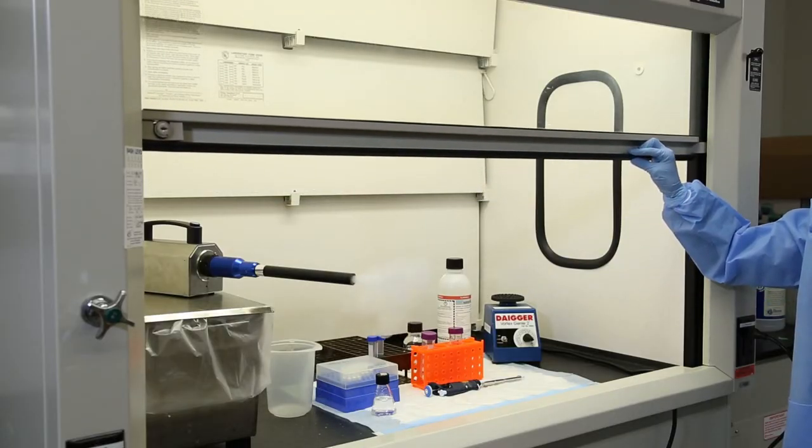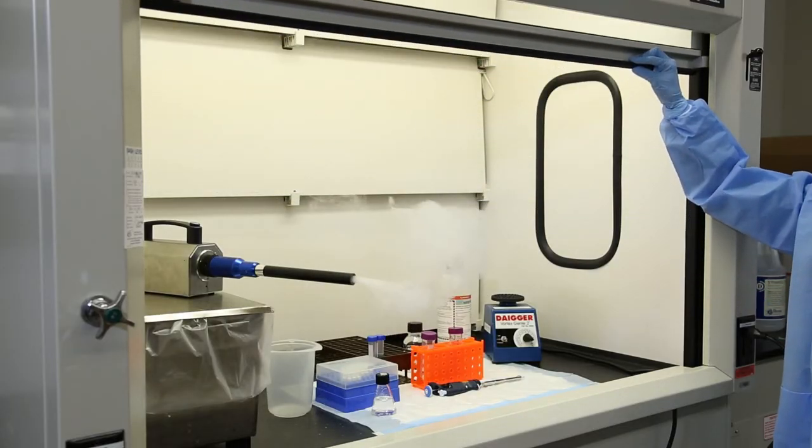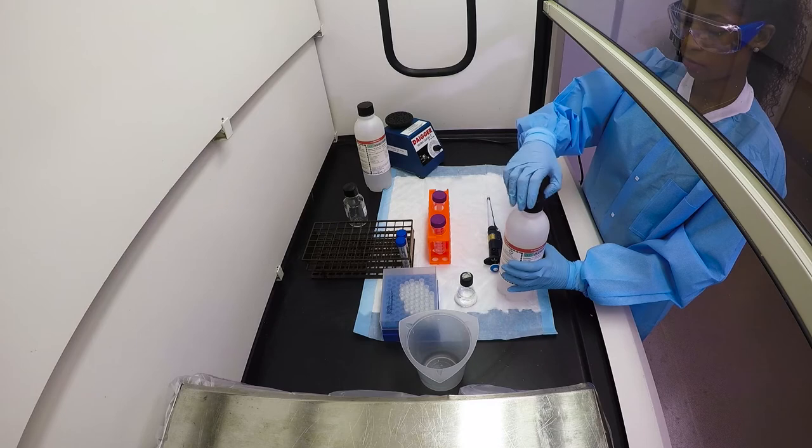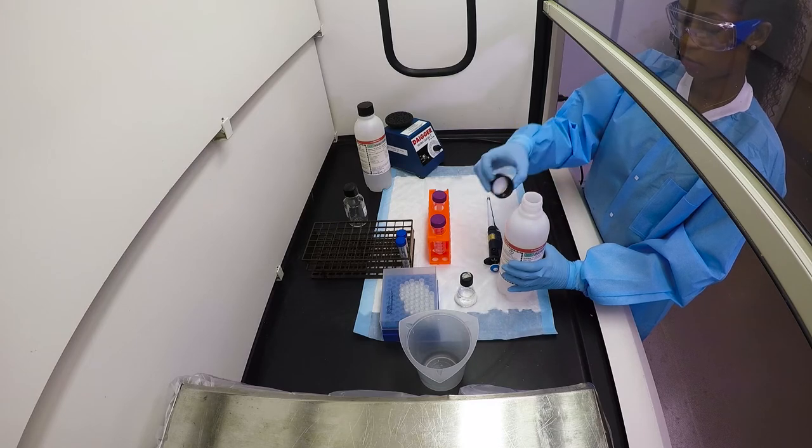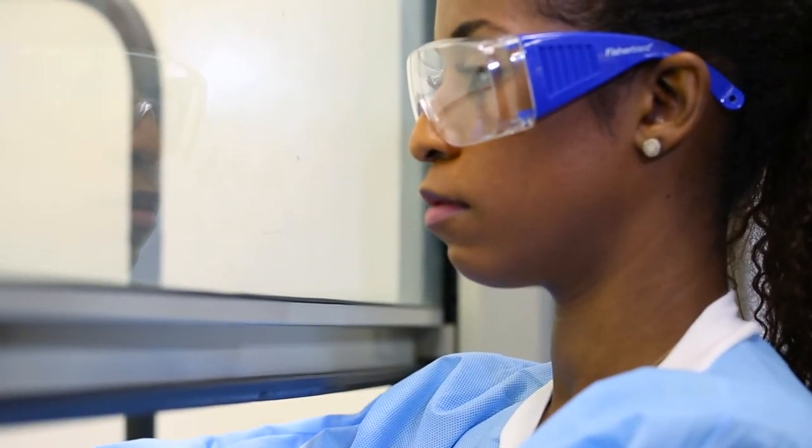If the sash is too high, the air coming into the hood may slow to a point that the chemical vapors can leak out. The sash should be in between the worker's face and the chemicals inside the hood. If the bottom of the sash is near the nose or mouth, the hood may not be providing good protection.